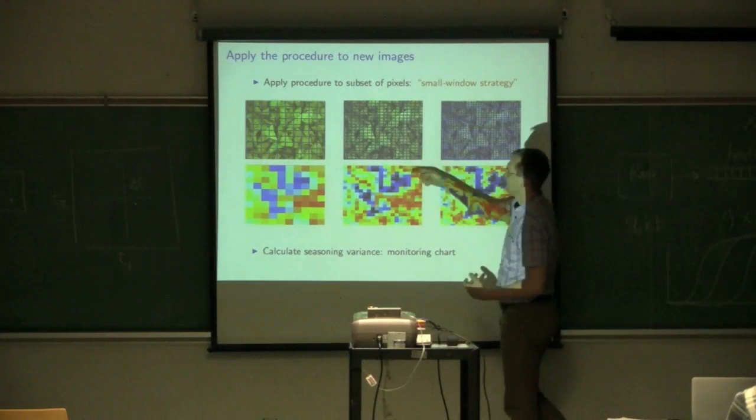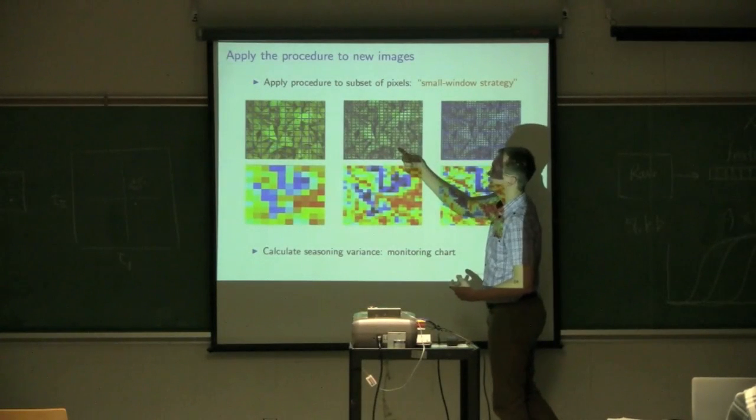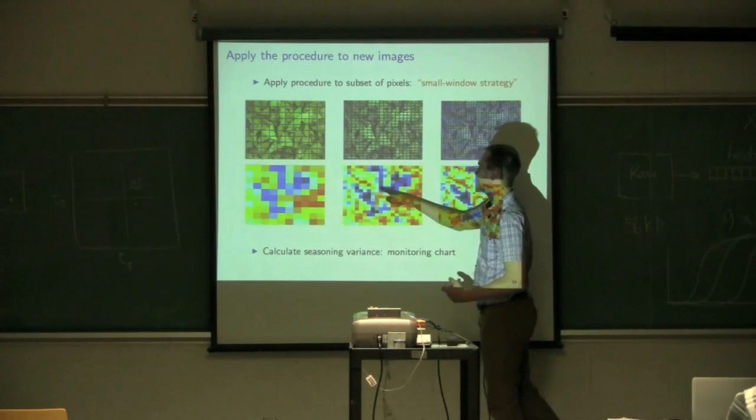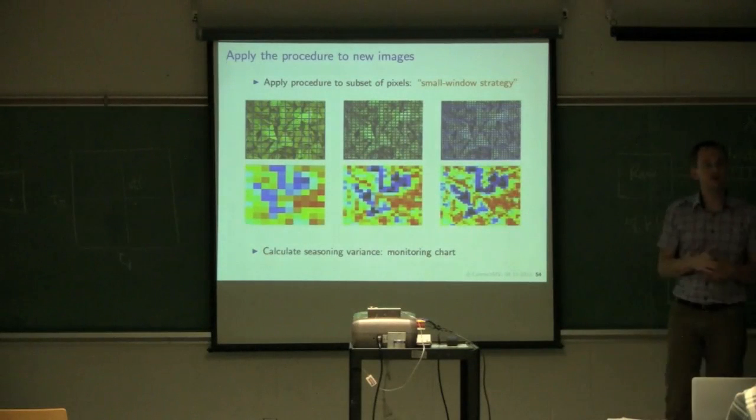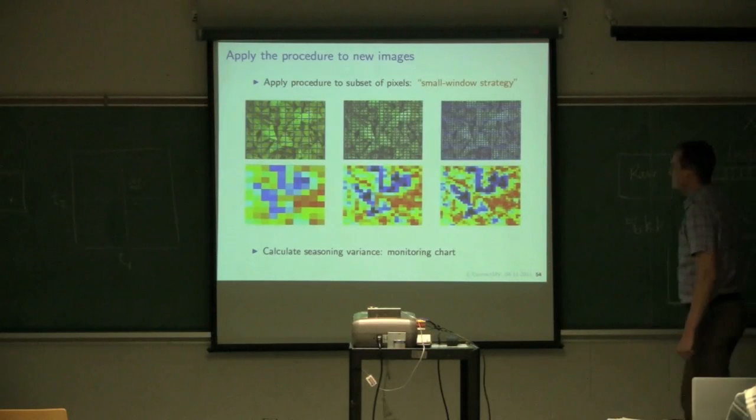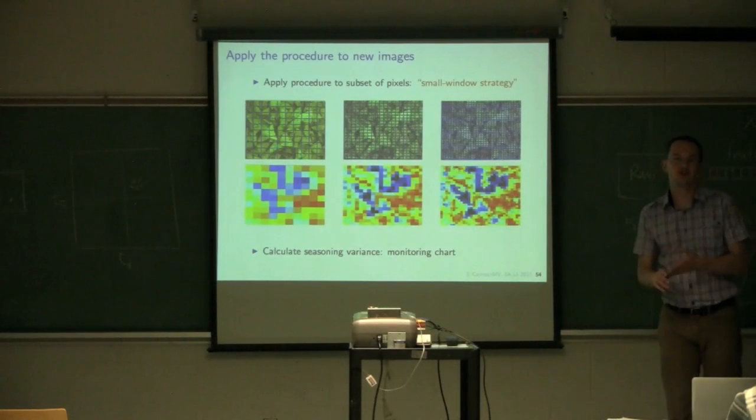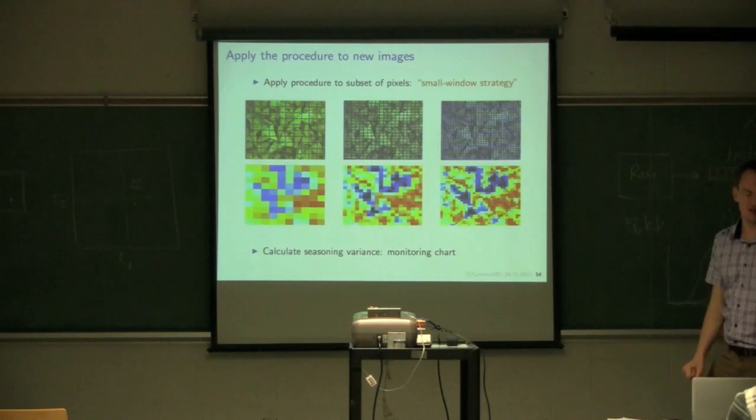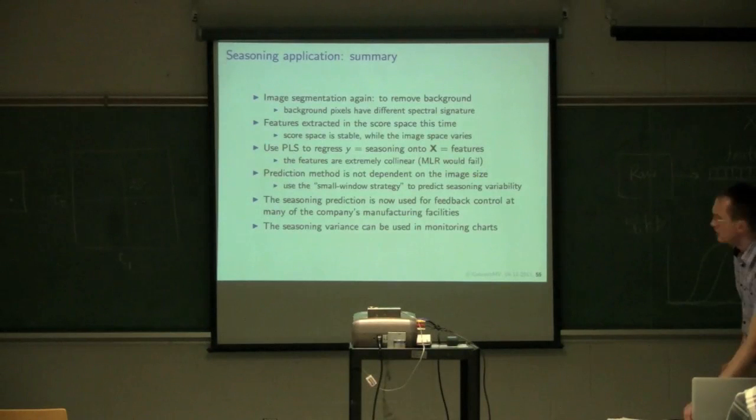And what they do now, in fact, is they use a medium-sized window. And they calculate the variance of the seasoning. So every seasoning value that's predicted here, you calculate the variance. So not only do they get a prediction of seasoning, but they also get a prediction of the variability of the seasoning. And they monitor that on a control chart. So you're not just trying to predict from images just a single number.